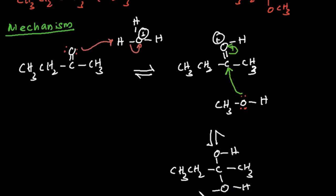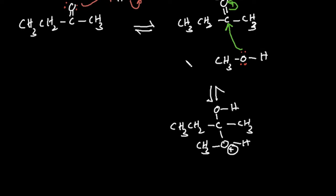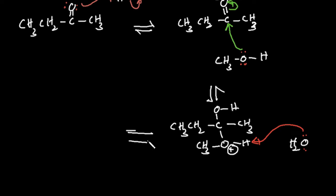In this new intermediate, this oxygen is positively charged. We have water in our reaction mixture because we already made one water molecule. This water molecule H₂O grabs this hydrogen, making a hydronium ion — meaning it's an acidic medium. When water grabs a hydrogen, it makes a hydronium ion.